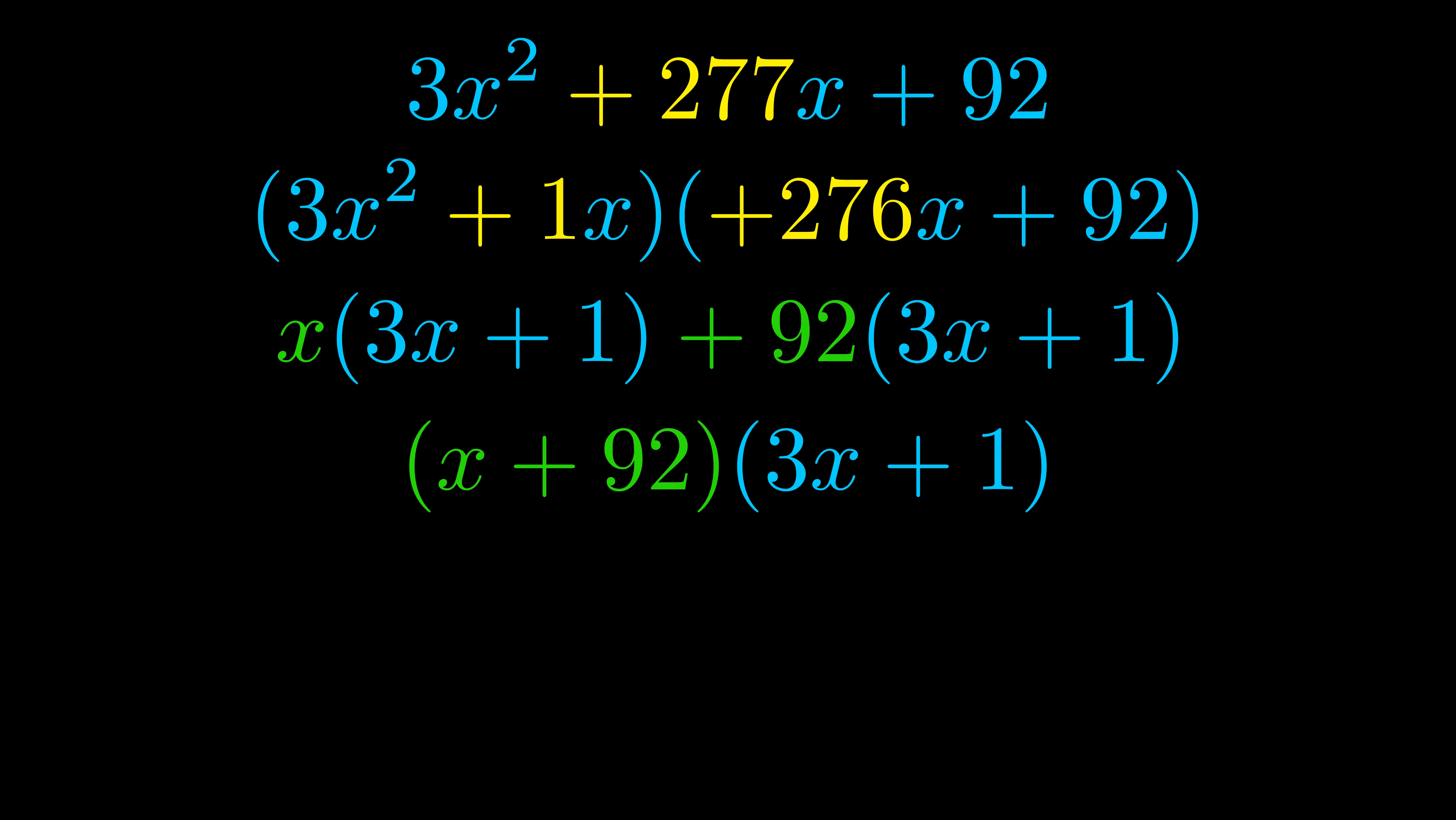Those blue values will become one of our factors and we will combine the two green values, the GCFs that we pulled out, to get the other one. And that is our fully factored equation.